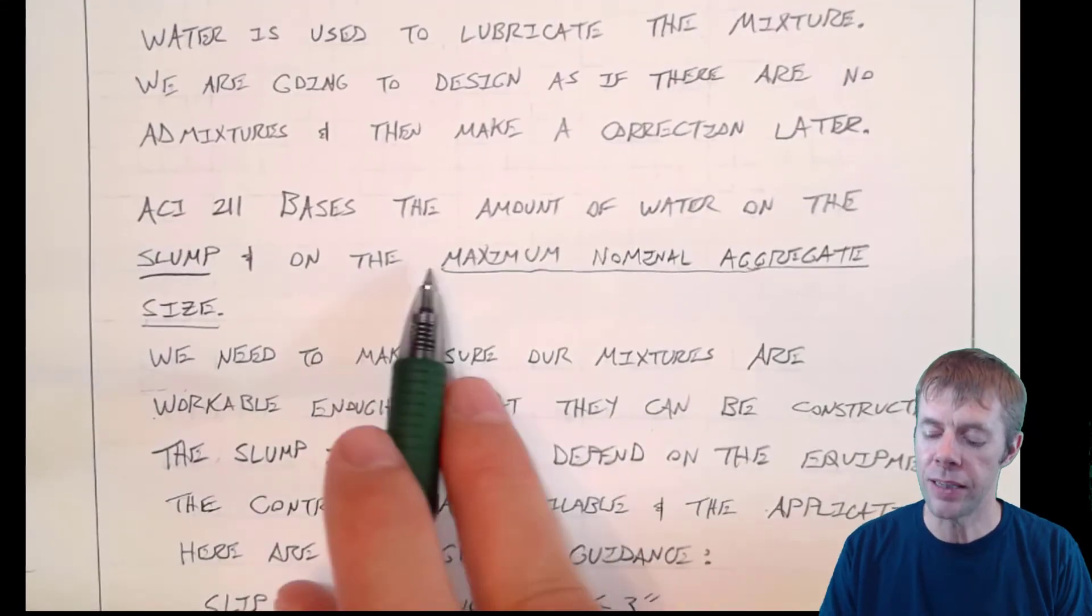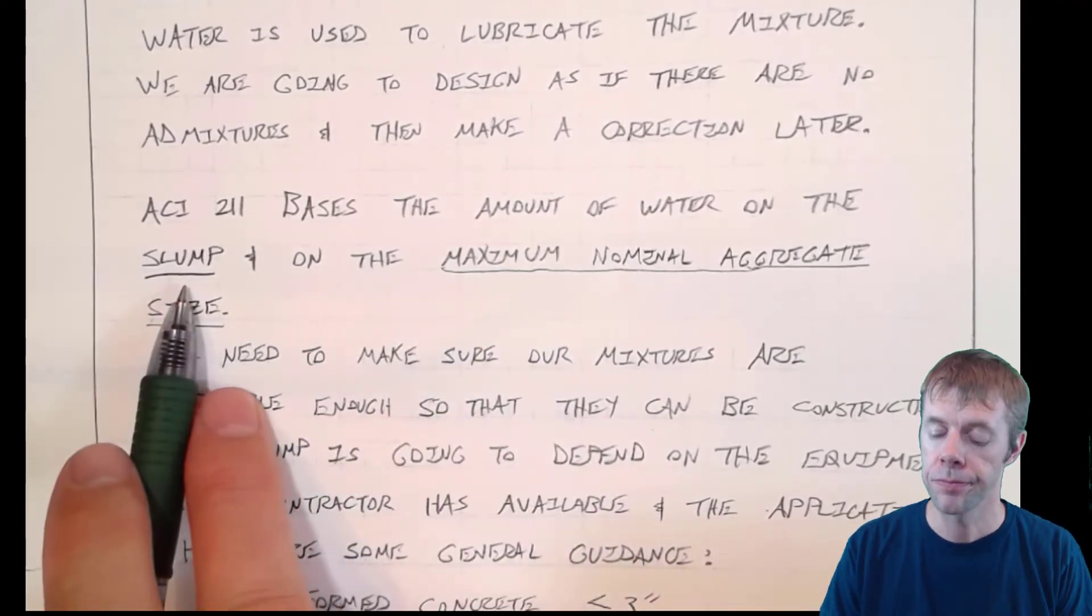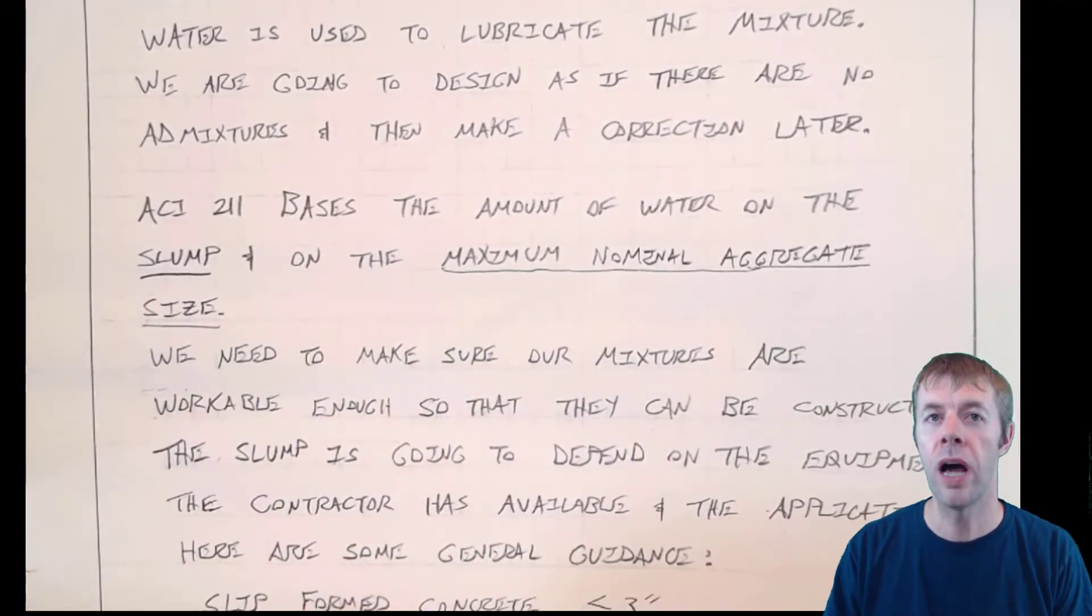ACI-211 bases the amount of water on two things. The slump and the maximum nominal aggregate size. You're going to see this over and over again.